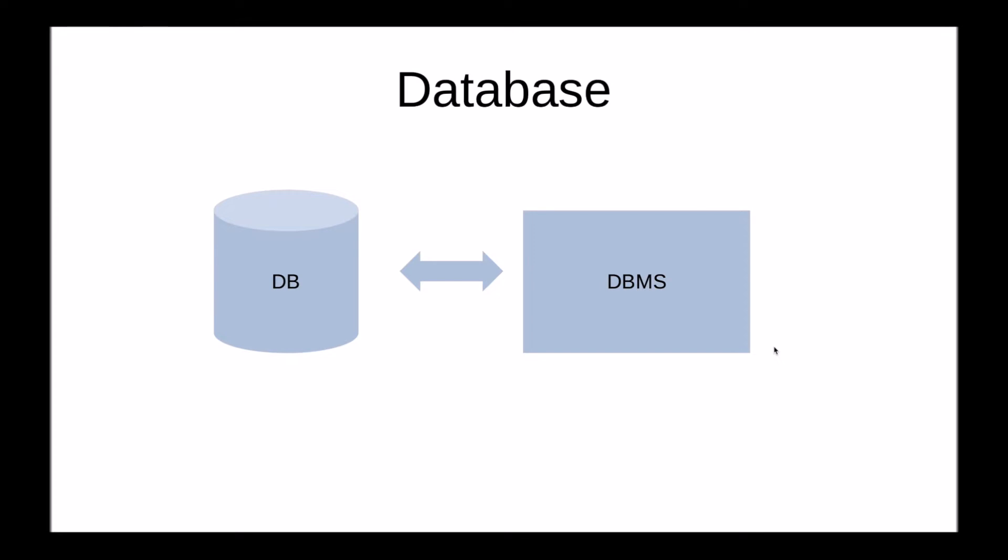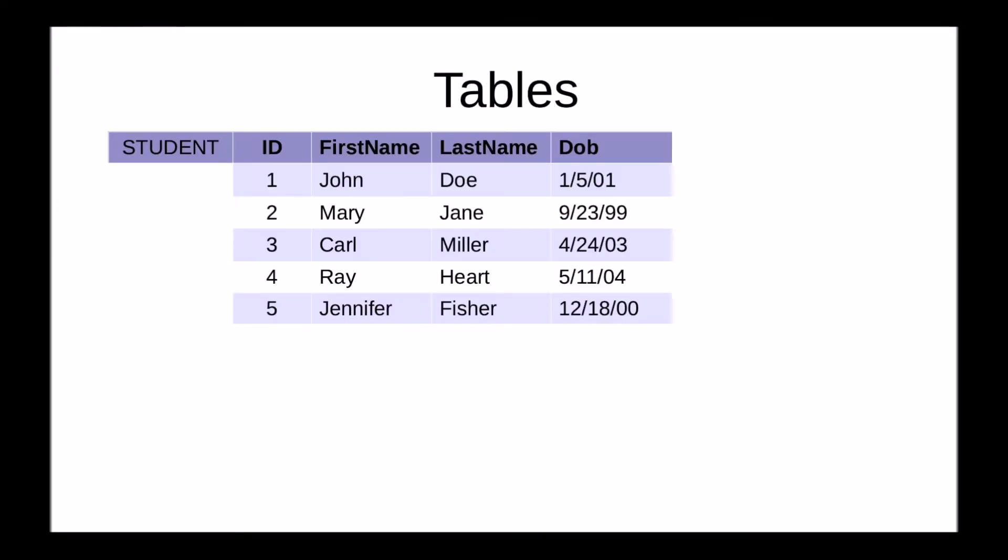Now a relational database consists of tables. Here's an example of a table. This table stores student records. It has four columns: ID, first name, last name, and date of birth, and it has five rows.